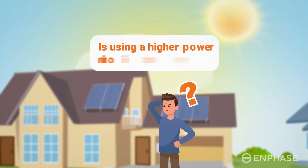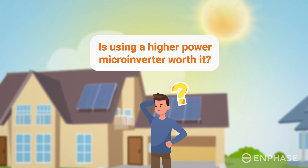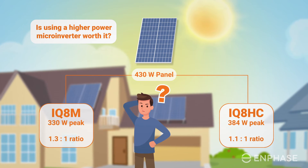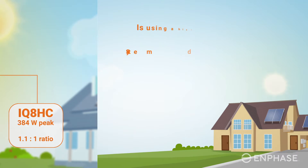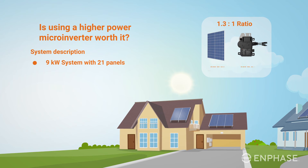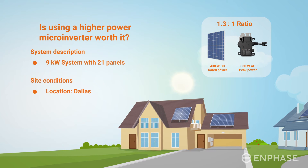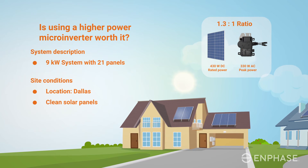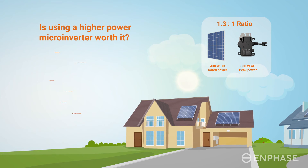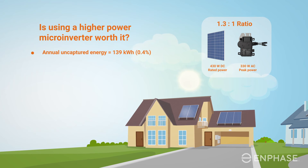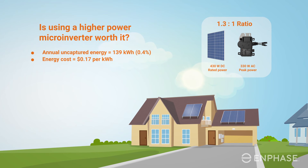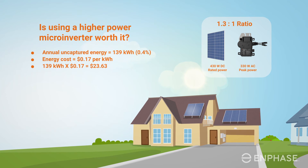How can we be sure that we have selected the optimal pairing of microinverter and solar panel? A simple way is to compare the value of the uncaptured energy to the cost difference of using a higher powered microinverter. Consider a scenario with a 9 kW system with a 1.3 to 1 DC to AC ratio, located in Dallas, Texas, with clean new solar panels facing south at an ideal 25-degree tilt. The estimated uncaptured energy is 139 kWh per year, and the average cost of energy is 17 cents per kWh.